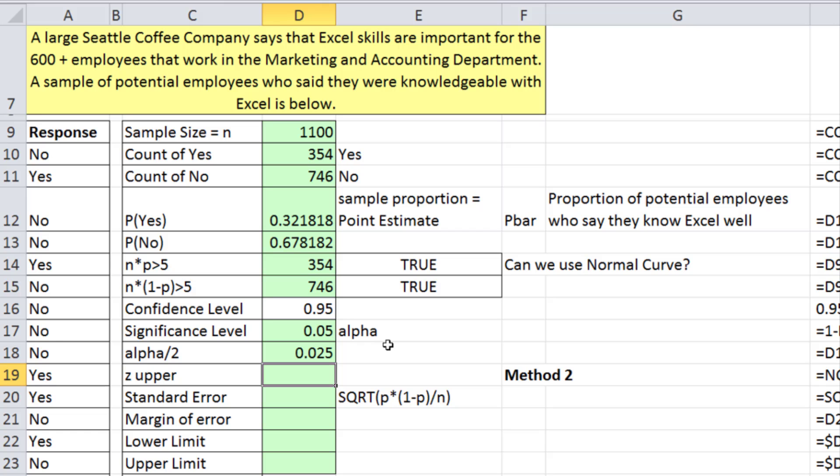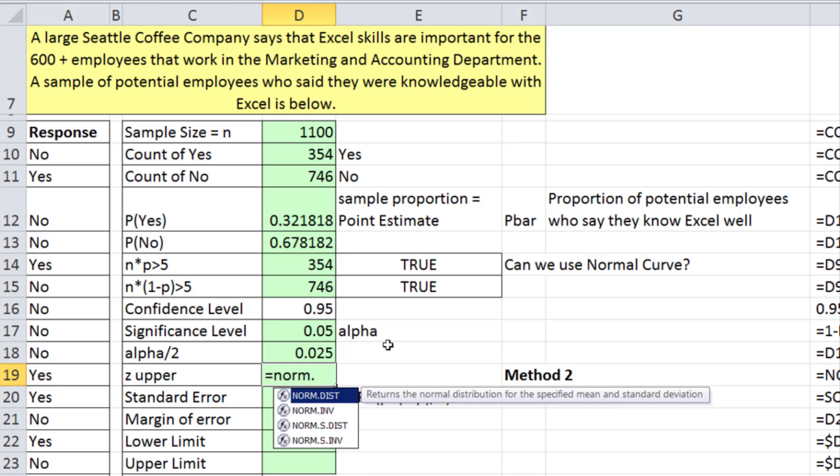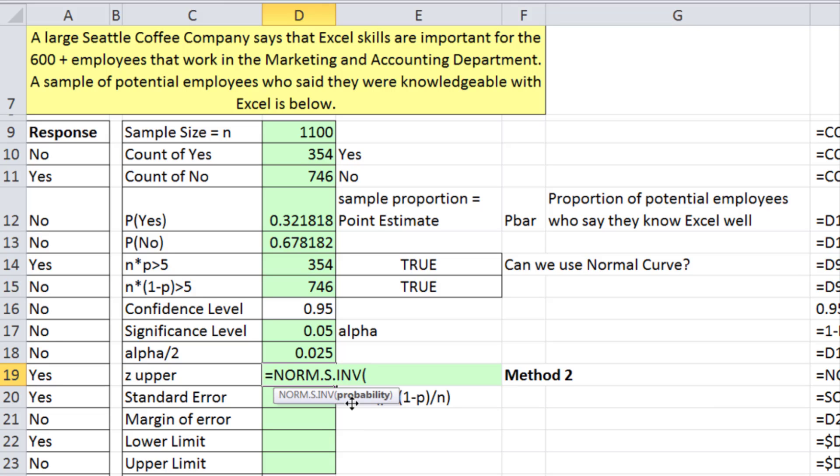We'll calculate our z on the upper end using NORM.S.INVERSE. The probability - we need all the probability minus the little bit on the upper end, so we'll say 1 minus. There's our upper 1.96 approximately. For the standard error, we have our formula right here, we saw it in the PDFs: p times 1 minus p divided by n. So the p times 1 minus p divided by our n, and we get 0.014.